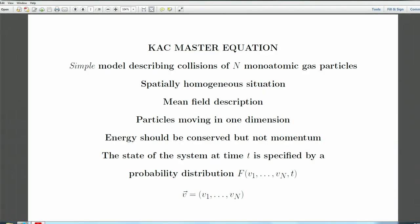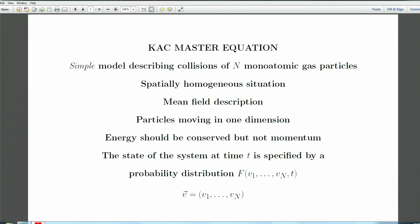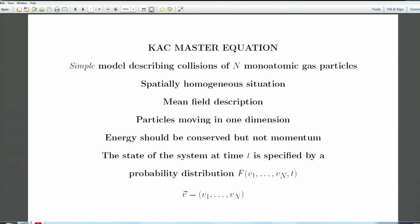The Kac master equation — notice I put 'simply' in italics, I want to emphasize it — is a really extremely simple model. It is supposed to describe collisions of n monoatomic gas particles. Of course this is a very difficult problem, so what you do is cut it down to something tractable. The toughest assumption we're going to make is to talk about the spatially homogeneous situation.